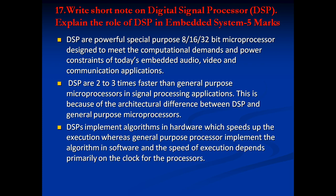Next question: write a short note on Digital Signal Processor (DSP) or explain the role of DSP in embedded systems, 5 marks. A DSP is a special-purpose processor available in 8-bit, 16-bit, or 32-bit versions, mainly used for computation-intensive embedded audio, video, and communication applications. A DSP is two to three times faster than a general-purpose microprocessor for signal processing because of architectural differences. A DSP implements algorithms in hardware to speed up execution, while a general-purpose processor implements algorithms in software.